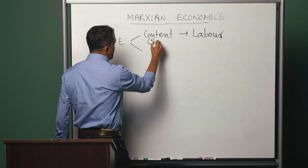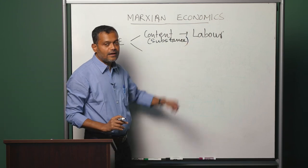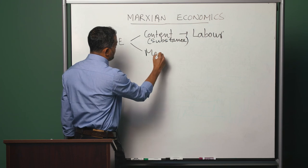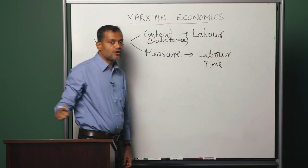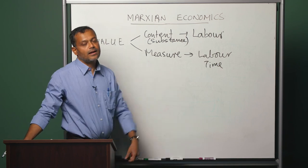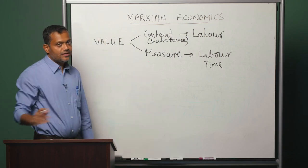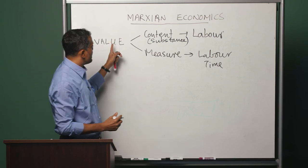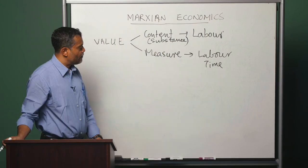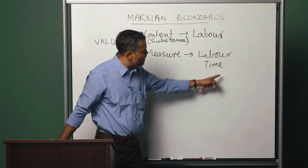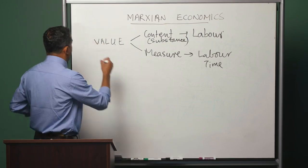What we have understood so far can be summarized as follows. We have understood the concept of value by looking at the commodity. The content of value is the labor that has gone into its production — Marx also calls this the substance of value. The measure of value is labor time, because the amount of labor that has gone into producing a commodity can be measured by the amount of time that labor has been put into producing that commodity. So the substance of value is labor, and how do we measure how much value a commodity has? We measure it by the amount of labor time that is necessary for its production.